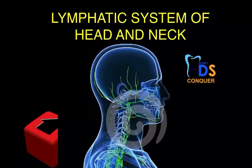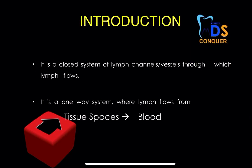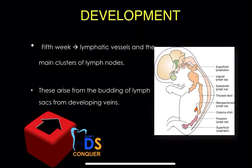Hi everyone, myself Dr. Saiti. The next topic from your anatomy for your basics paper is the lymphatic system of head and neck. Every essay question has to start with contents. You can start the introduction like: it's a closed system of lymphatic channels or vessels through which the lymph flows. It's actually a one-way system where the lymph flows from the tissue spaces to the blood.